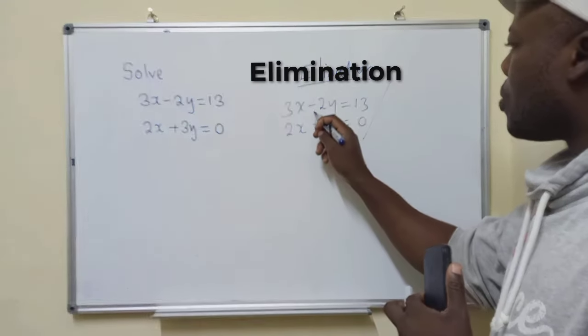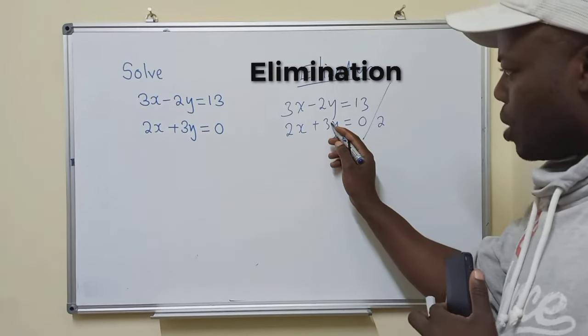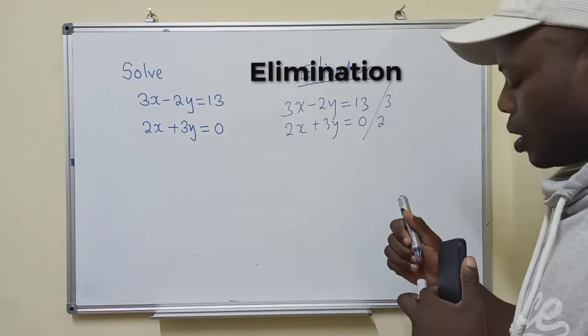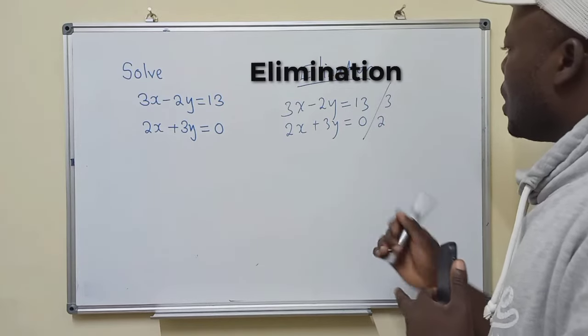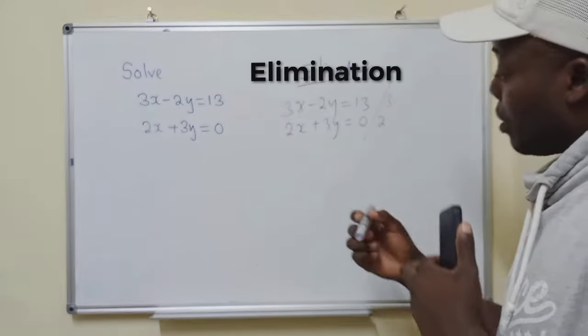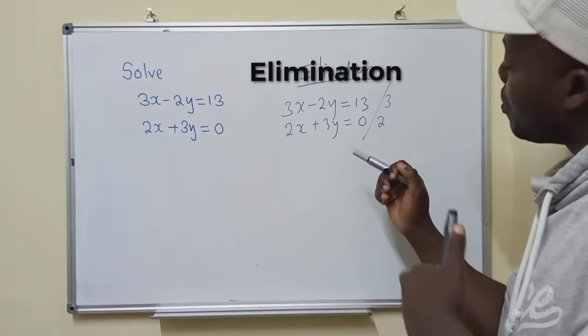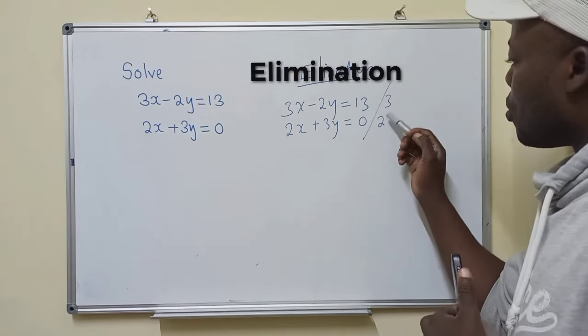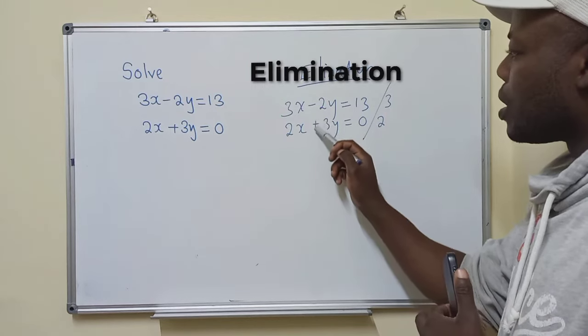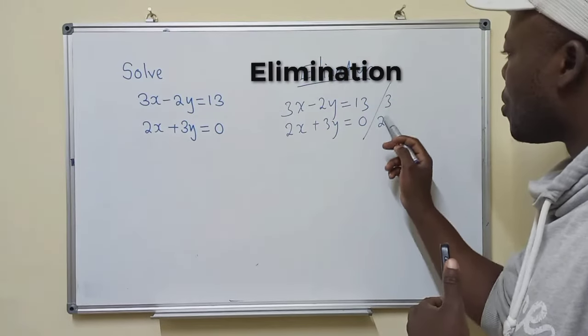We get whichever number is here and write it down. Now, whichever number is right here, write it straight with the first equation. So now, are you supposed to put anything here? It depends. You can either put negative here or here. Now, let's check. What is it that determines you to put a negative here or here? If the signs are different here, don't put anything. Just get the constants and put them here. Switch.